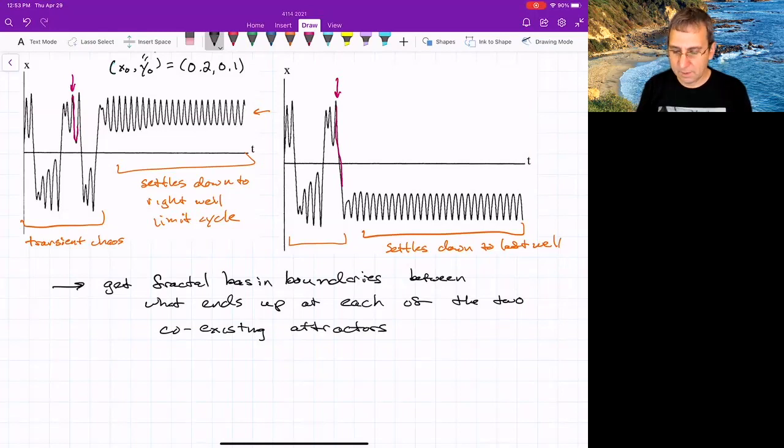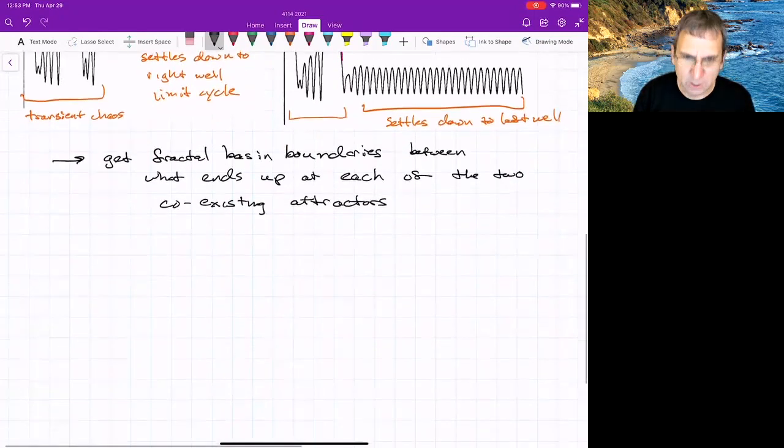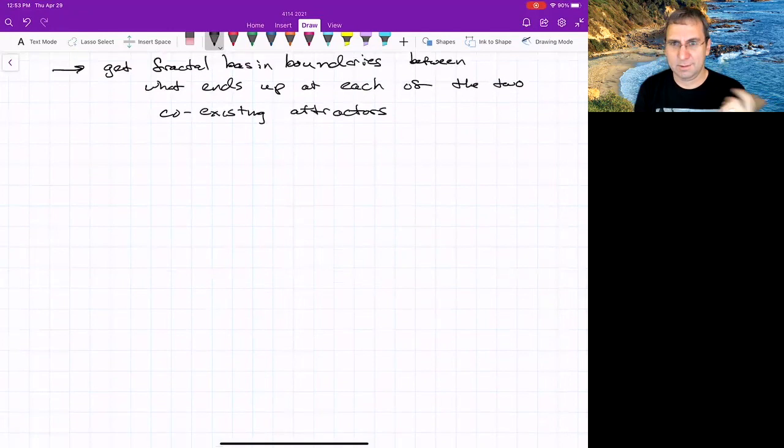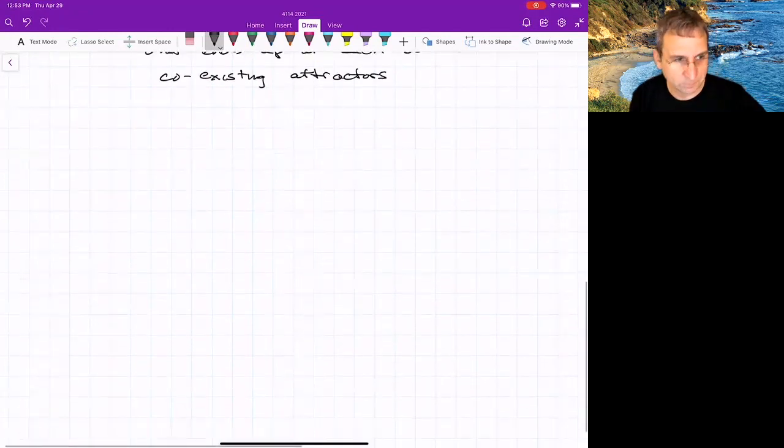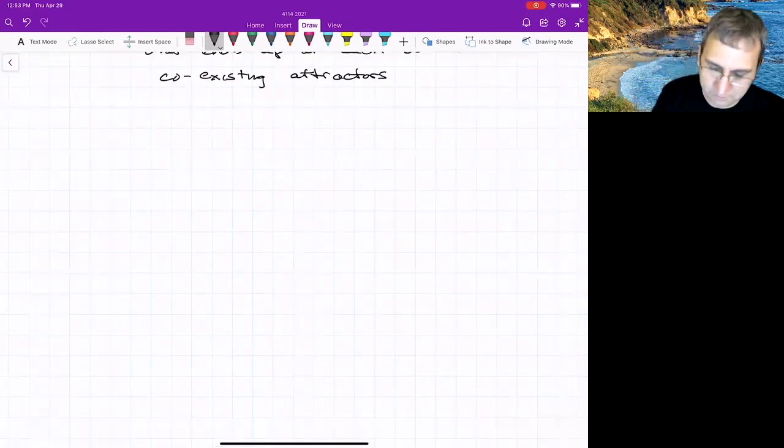So we're going to now back up and try to look at the origin of chaos in this type of system and connect it to something called the Smale Horseshoe, ways of understanding chaos at the level of symbolic dynamics. Pretty ambitious. Let's see where we go.